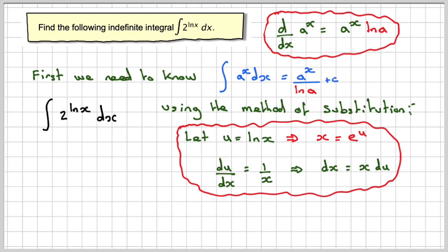So our integral becomes 2 to the u, because ln x is u, and then we've got x du, so we have e to the u du. Pause the video if you're not sure and have a good look at it.